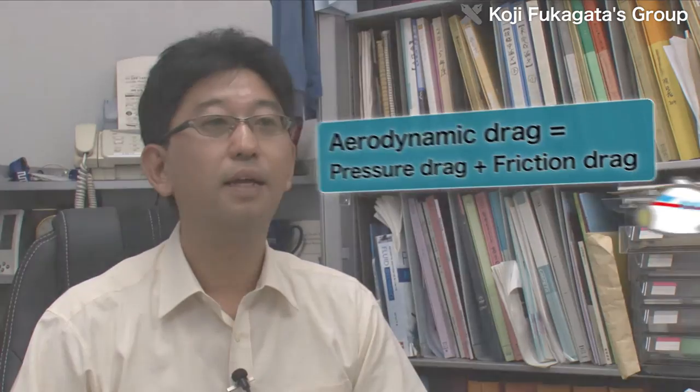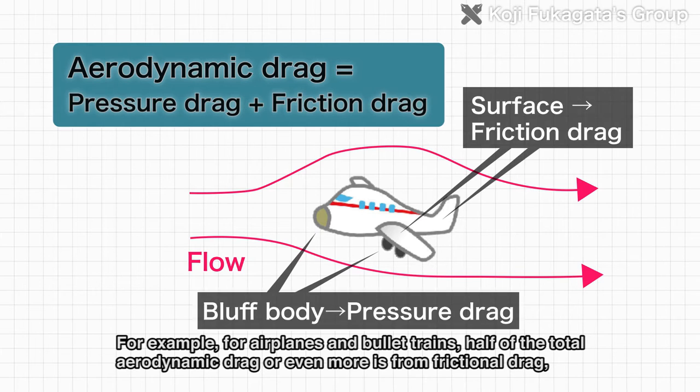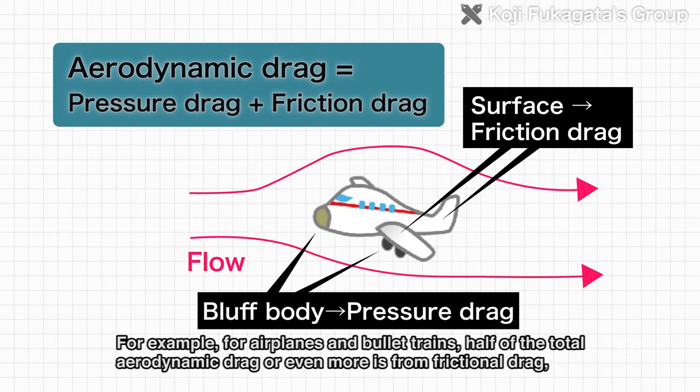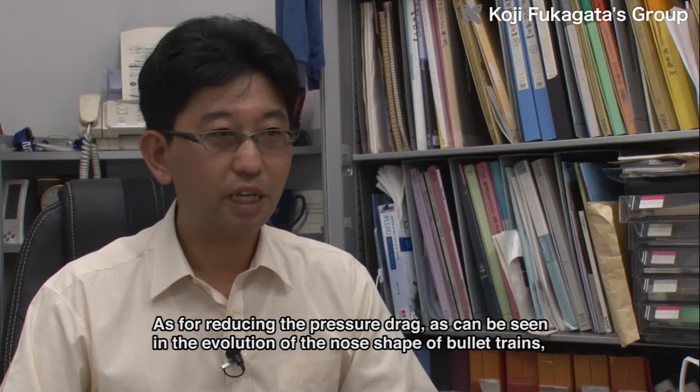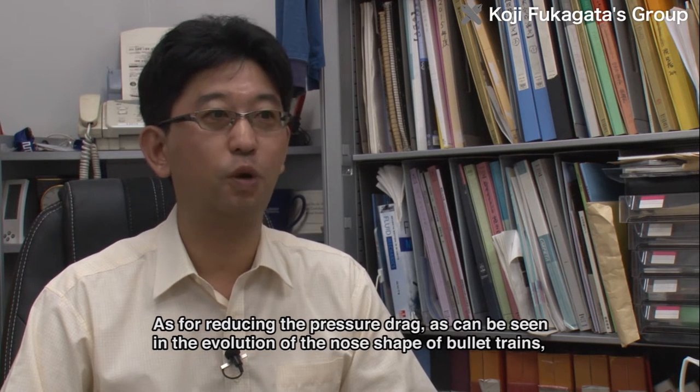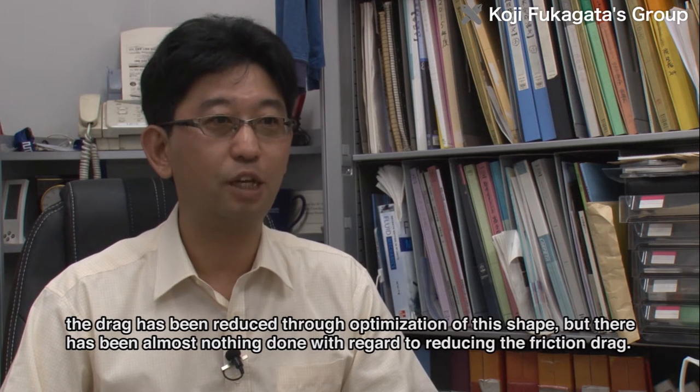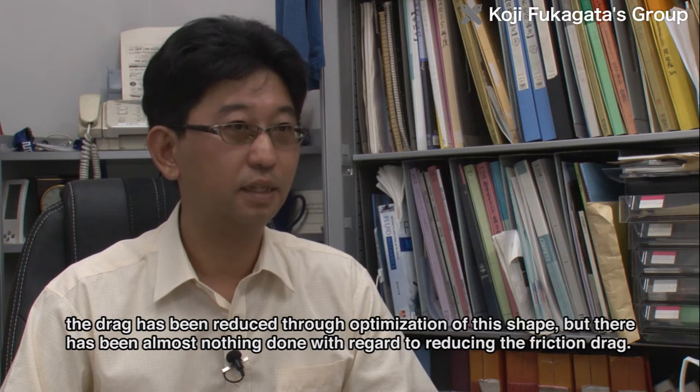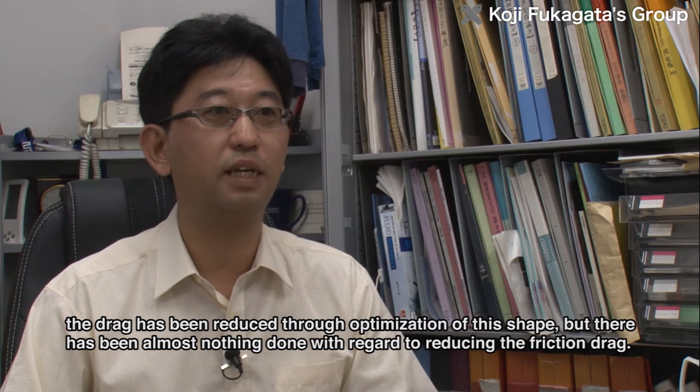空力抵抗は流れの中にある物体の圧力差による圧力抵抗と、流体の粘性によって物体の壁面に働く摩擦抵抗に大きく分けられます。例えば航空機や新幹線車両などでは、全抵抗の半分もしくはそれ以上が摩擦抵抗によるものでして、これがエネルギーの無駄遣いの大きな原因となっております。圧力抵抗の低減に関しては、新幹線車両の先頭形状の進化に見られるように、形状最適化による抵抗の低減がなされております。しかし、摩擦抵抗の低減に関しては、ほとんど手がつけられておりません。